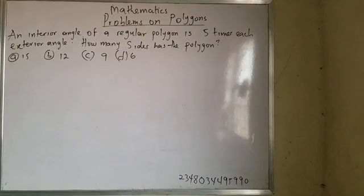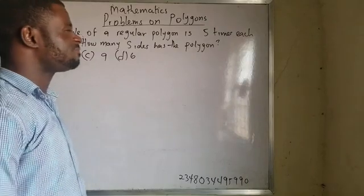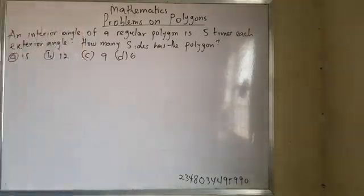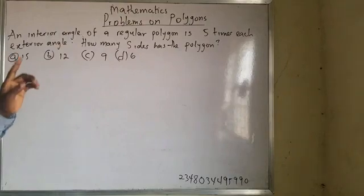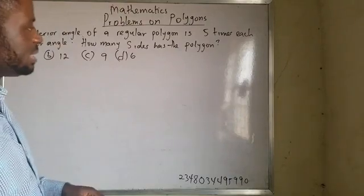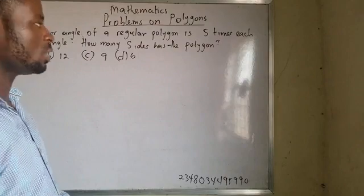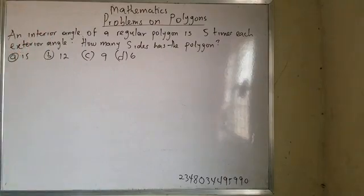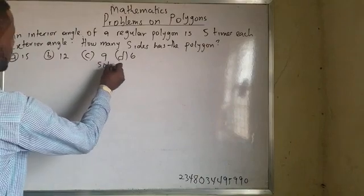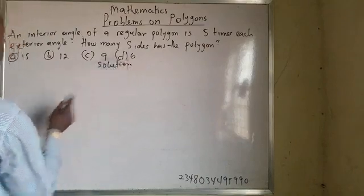Okay, look at this problem — it's a very simple one. An exterior angle of a regular polygon is five times each interior angle. How many sides has the polygon? It's a very simple one, and one of my students has been asking about this problem. Let's see how it goes.